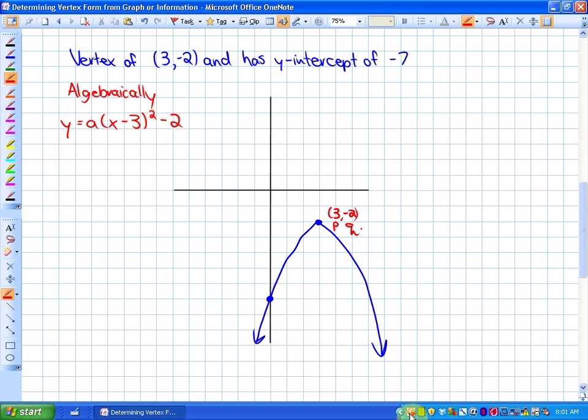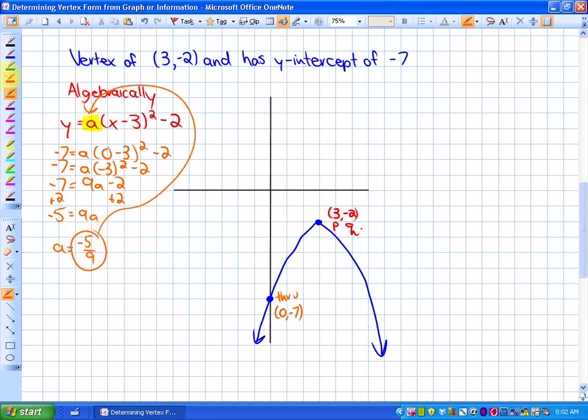The last thing we need to do is to determine the value of a. For this particular function, the way that we do that algebraically is to use some sort of through point. And our through point that we're going to use here is the point 0 and negative 7. If I substitute that in for x and y, I can solve for a, which will give me the value of a. As you can see, the value I get for a here will be negative 5 ninths. So that means that this function is equivalent to y is equal to negative 5 ninths, x minus 3 squared minus 2. That is this function.